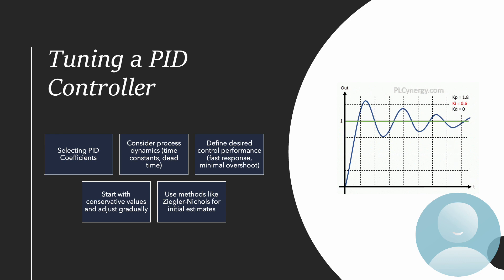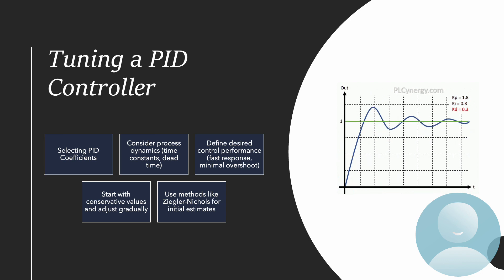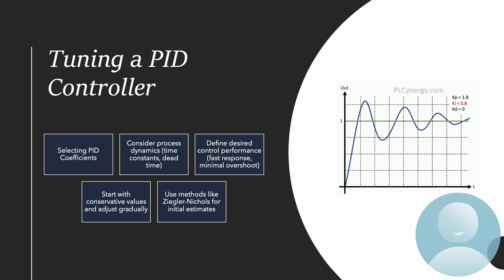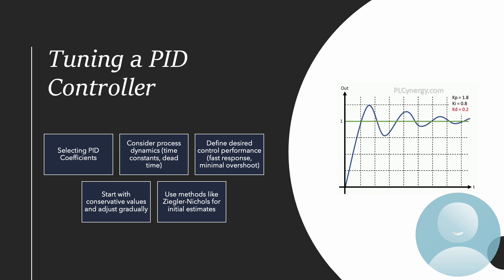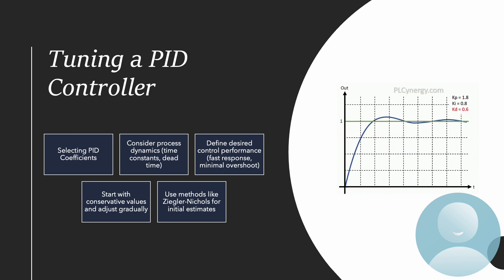Now after seeing all three coefficients — KP, KD, and KI — we should know how to select them. It is a bit complicated. If we know the mathematical model of our drive, we can easily calculate them in MATLAB. But most of the time for real systems we don't know the mathematical model, so in most projects we do it by trial and error: use some combinations, and if the system is oscillating change KI, if it is too sensitive change KD. There are also more systematic methods like the Ziegler-Nichols method, or starting with conservative values and adjusting gradually.